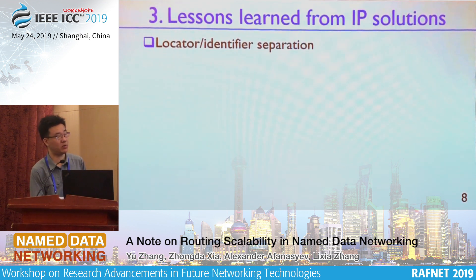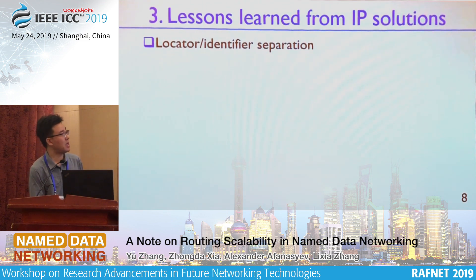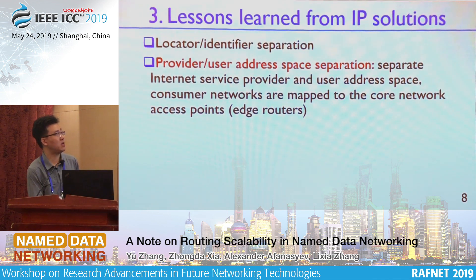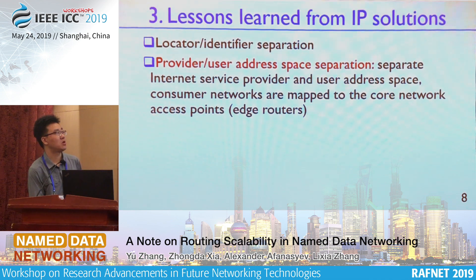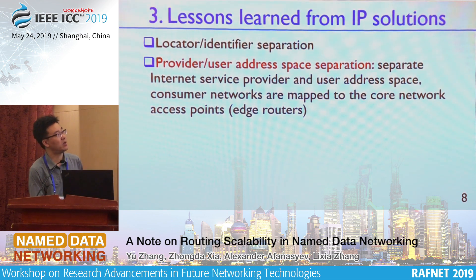There are two IP solutions. First, we call it locator-identifier separation. Basically you build two separate namespaces: one for ID and another for location, building the location namespace on top of IP addresses. Another direction is provider-user address separation. It's the same namespace, but you choose which names you announce into the routing table and which are not. For those names that don't move, such as provider namespaces, you can announce them to the global routing table. For user addresses, you can do some mapping instead.